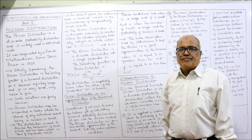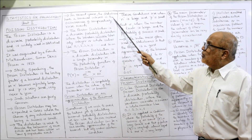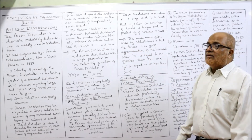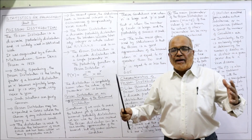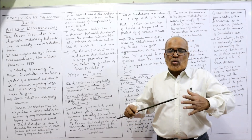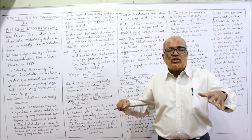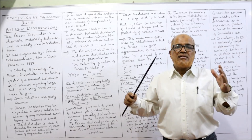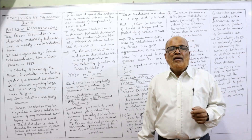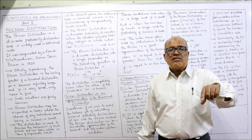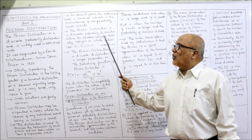In recent years, statisticians have renewed interest in accounts of comparatively rare events. Earlier, binomial distributions were widely used, but nowadays statisticians have seen that there are some events which are rare events. In those cases it will be difficult to apply binomial, so we apply Poisson distribution.